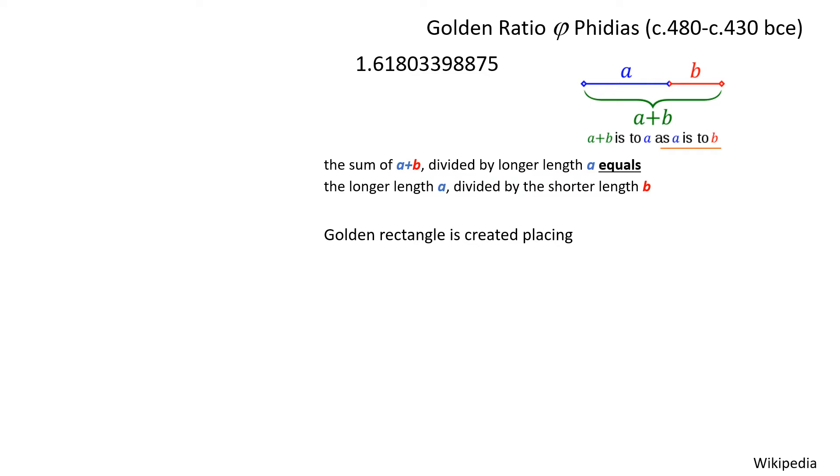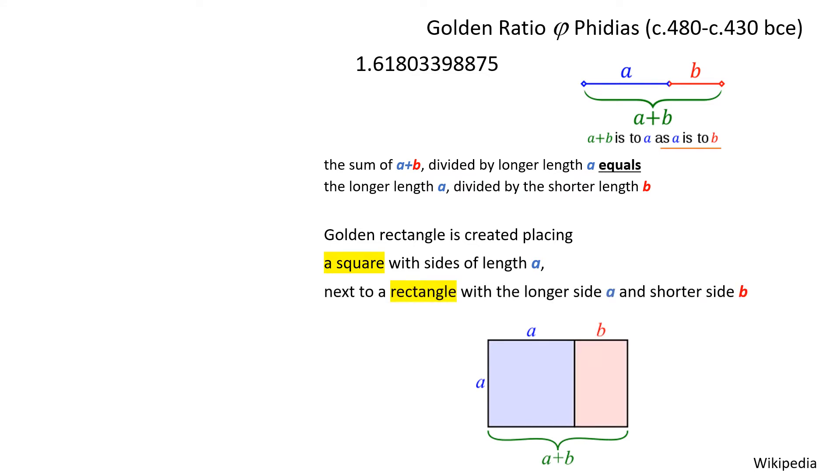To create a golden rectangle, what we do is we use a square that has the length of A and we add a rectangle by the side that has one side. The smaller side is going to be the length of B, which was in the golden ratio compared to A. And then to complete the rectangle, the other two sides are the length of A. This is a golden rectangle.